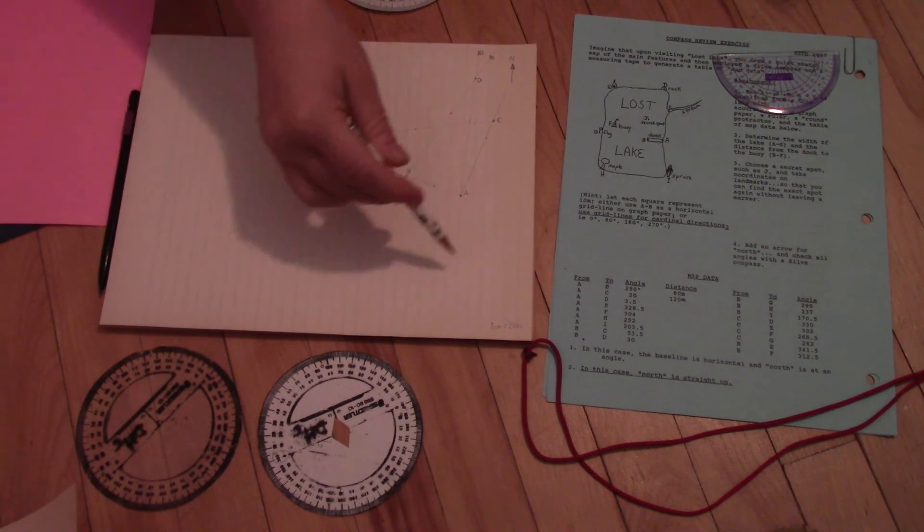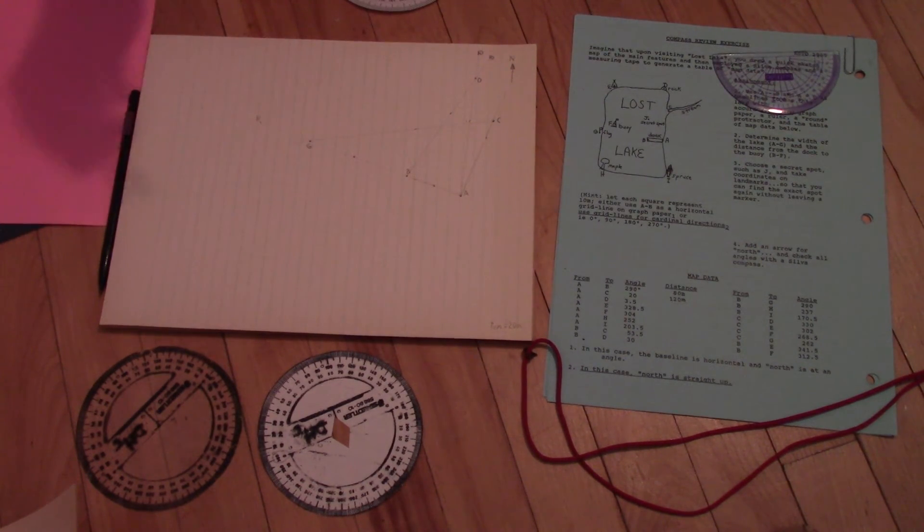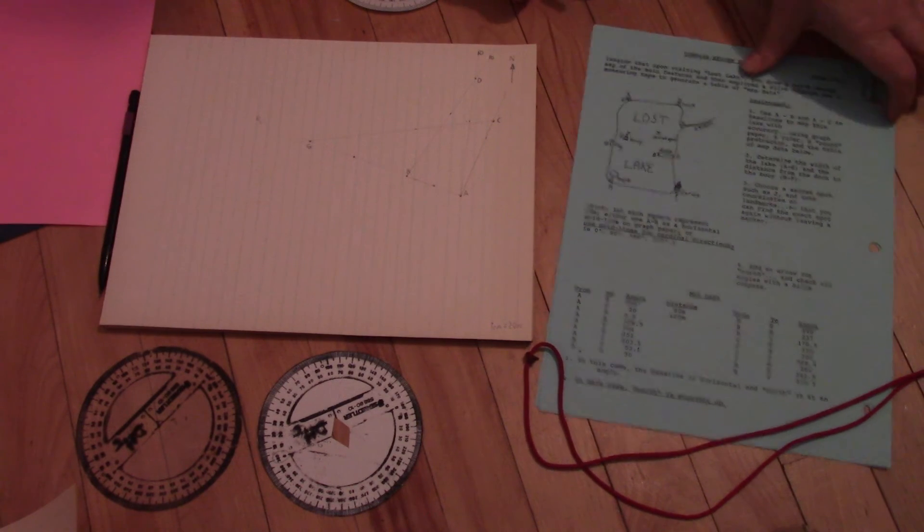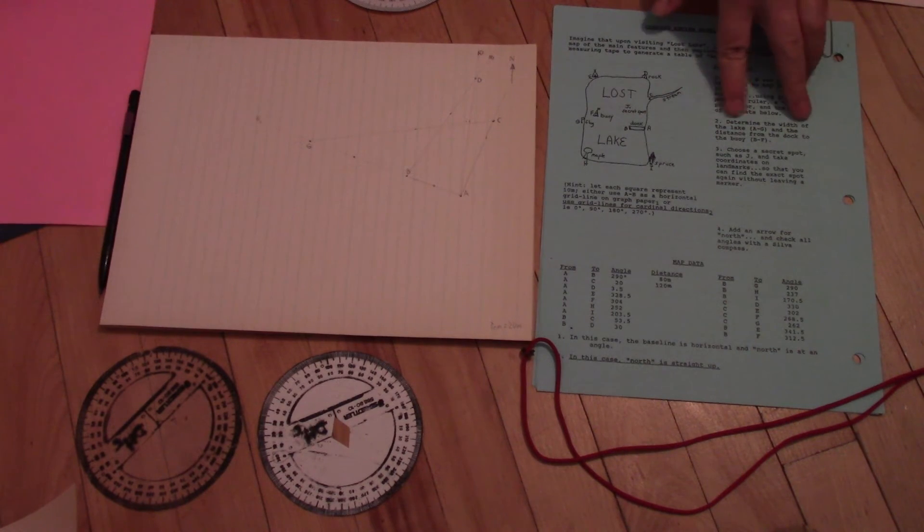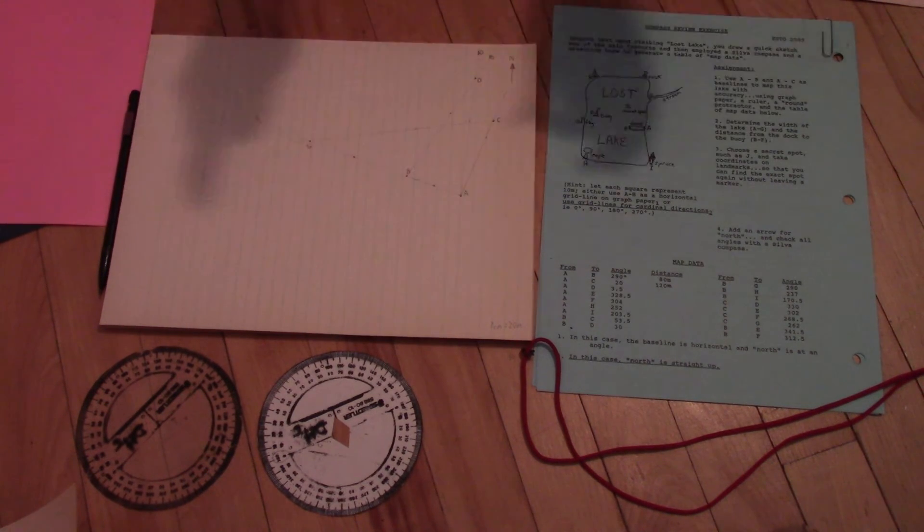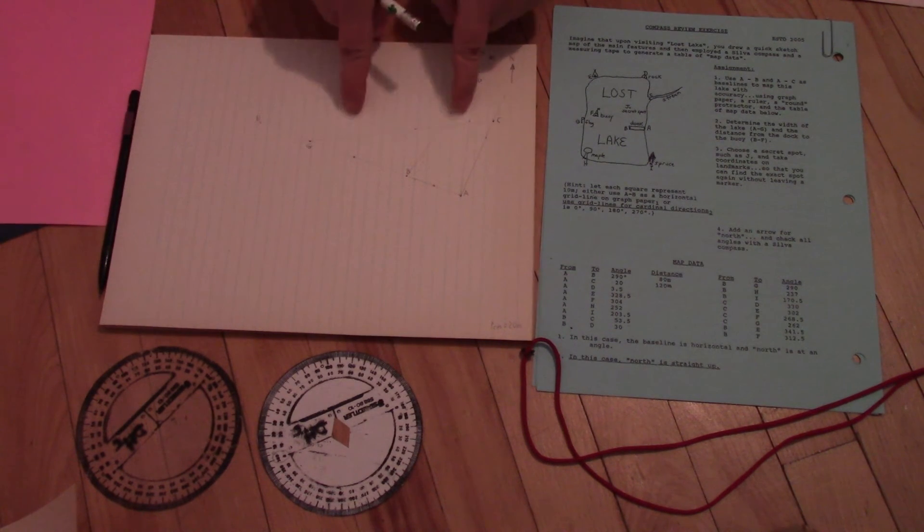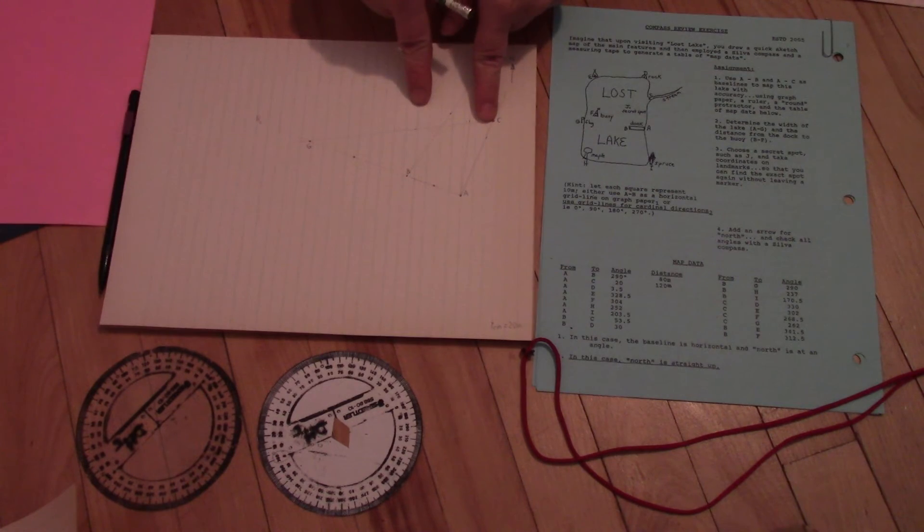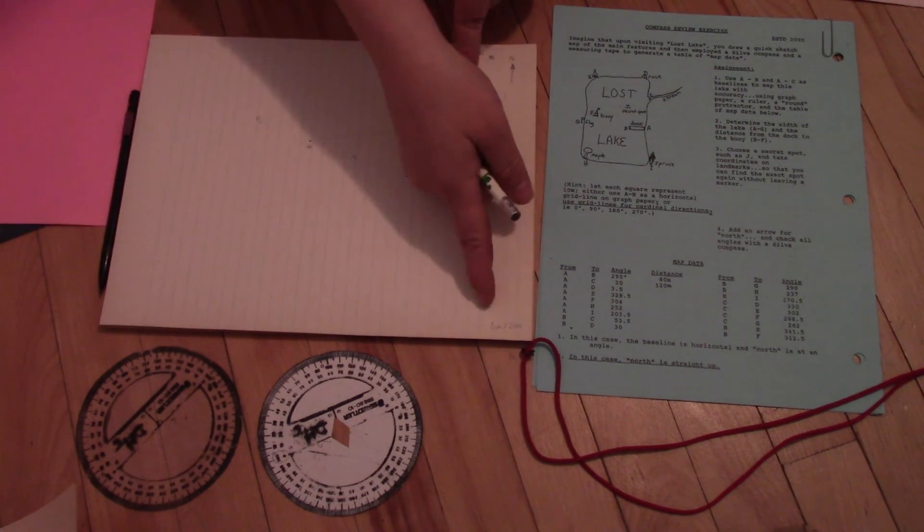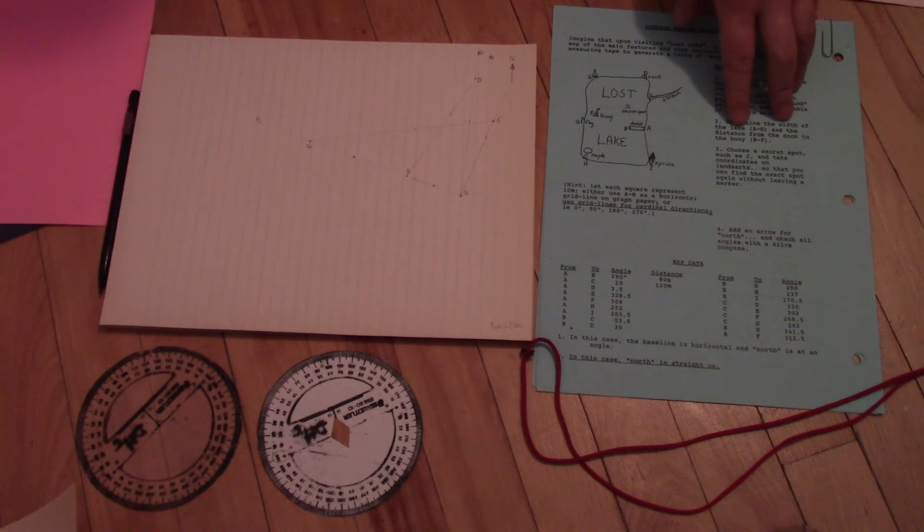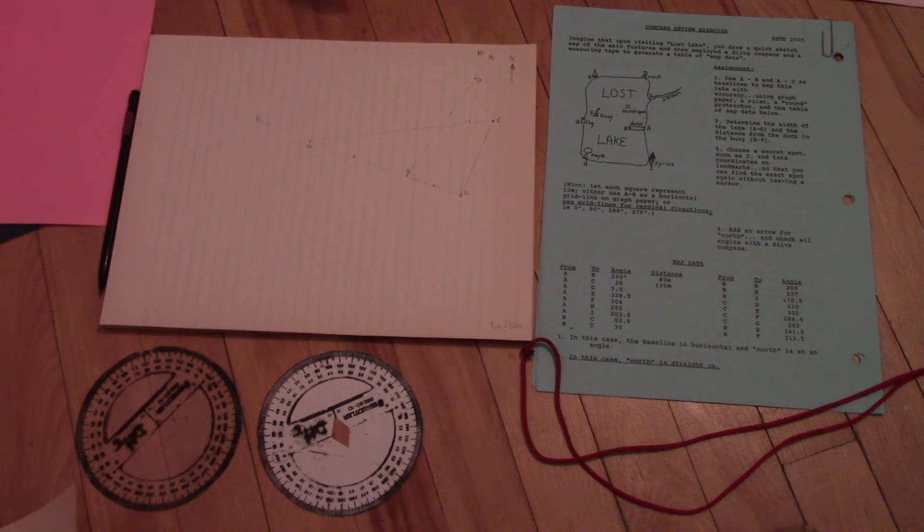So for the assignment, I want all the points on the map. Once you have all those points, you are going to show me that you did it right by doing a little bit of work here. It says here, use A and B to map out the whole map to determine the width of the lake. So once you've mapped this out, realistically, this should be accurate. Those angles that are on this page should be the same angles that are in real life, just following them further. So these numbers should translate to real world based on our scale. So if we determine the width of the lake, A to G, and the distance from the dock to the buoy, B to F. So let's just do A to G to show you guys how.